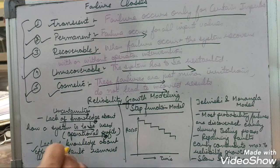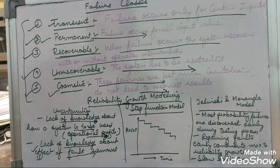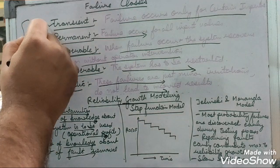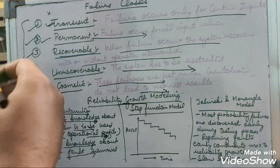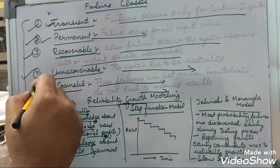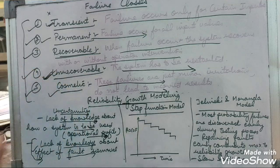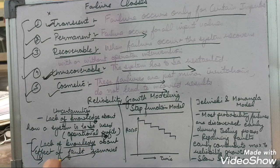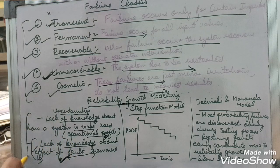Another source of uncertainty is the lack of knowledge about the effect of fault removal. As discussed, the type of fault removed impacts reliability significantly. Transient errors won't impact reliability much, but unrecoverable errors impact it greatly. Lack of knowledge about what type of errors have been removed makes it uncertain for software reliability to be computed.